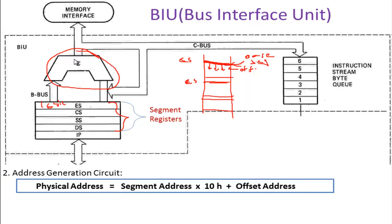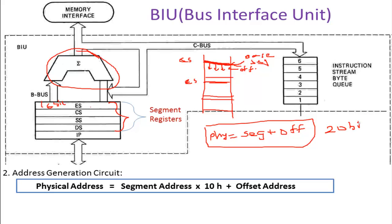The next thing we have is the address generation circuit. What this circuit does is calculate a physical address — that is the main work of this address generation circuit. There was a formula: physical address equals segment address plus offset address. 8086 has 1 MB of memory and to access this memory, a 20-bit address is given. But developers wanted to keep it as a 16-bit addressing scheme. For accessing 1 MB of locations in memory using a 16-bit addressing scheme, they developed a formula.